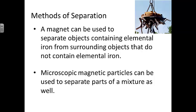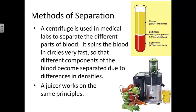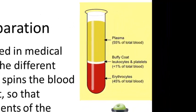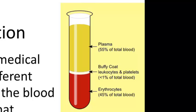Microscopic magnetic particles can be used to separate parts of a mixture as well. A centrifuge is used in medical labs to separate the different parts of blood — it spins the blood really fast so that different components separate out due to differences in their densities. The liquid plasma portion separates and stays at the top because it's less dense. At the very bottom you can see the erythrocytes, or red blood cells, that settle out first because they're very heavy and dense. In the middle, the white layer called the buffy coat contains leukocytes (white blood cells) and blood platelets.